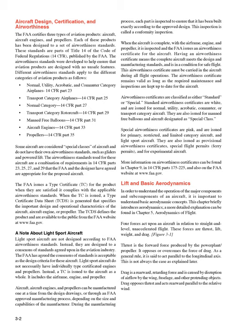Special airworthiness certificates are pink and are issued for primary, restricted, and limited category aircraft, and light sport aircraft. They are also issued as provisional airworthiness certificates, special flight permits, ferry permits, and for experimental aircraft. More information on airworthiness certificates can be found in Chapter 9, in 14 CFR Parts 175–225, and also on the FAA website at www.faa.gov.